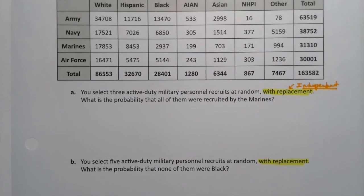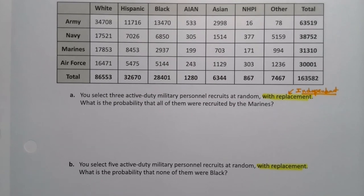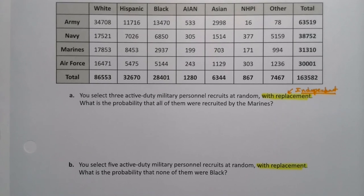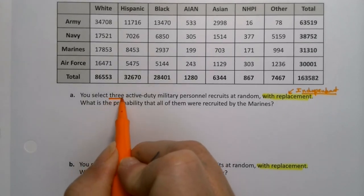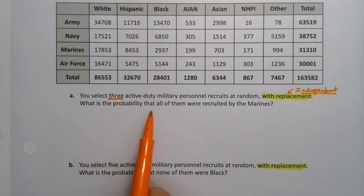Or if it's not there, there's a way around it, but we will not deal with that until much later in the course. We're going to select three active duty military personnel. What's the probability that all of them are recruited by the Marines?